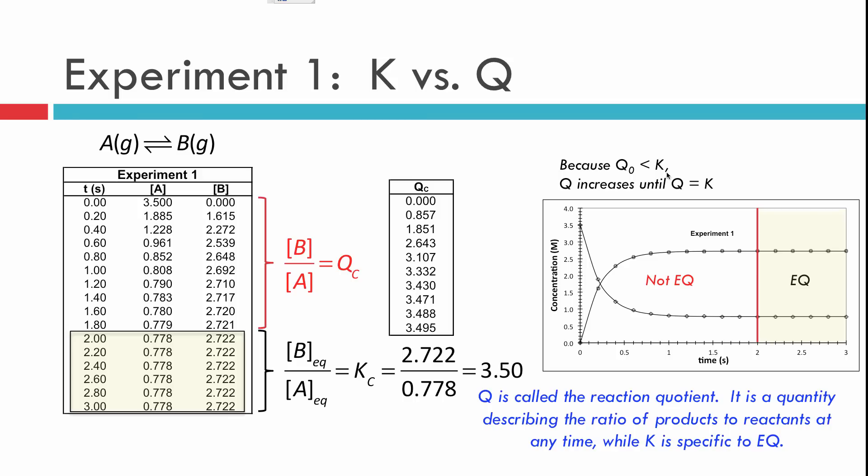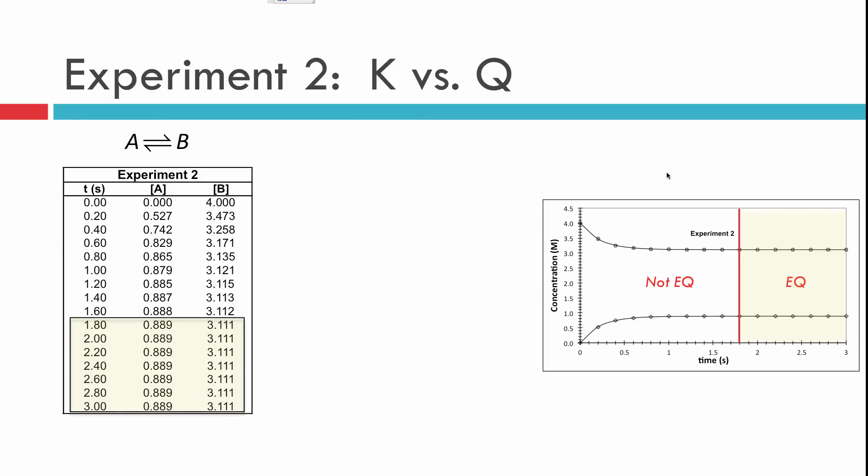Let's try the same thing with experiment two now. In experiment two, the equilibrium constant should be the same, but we should double check. Voila, we have the exact same equilibrium constant. We're in good hands.